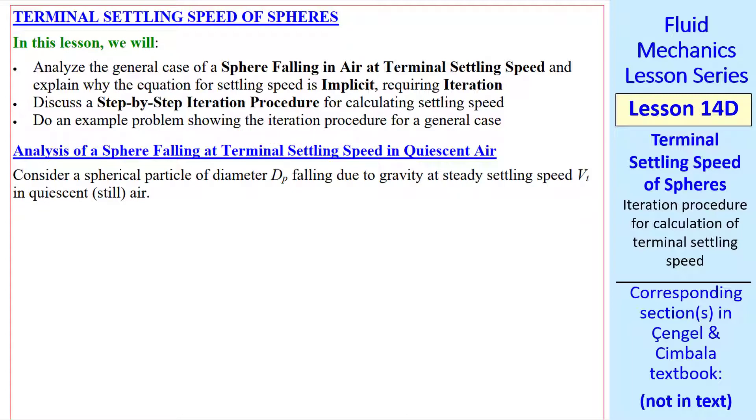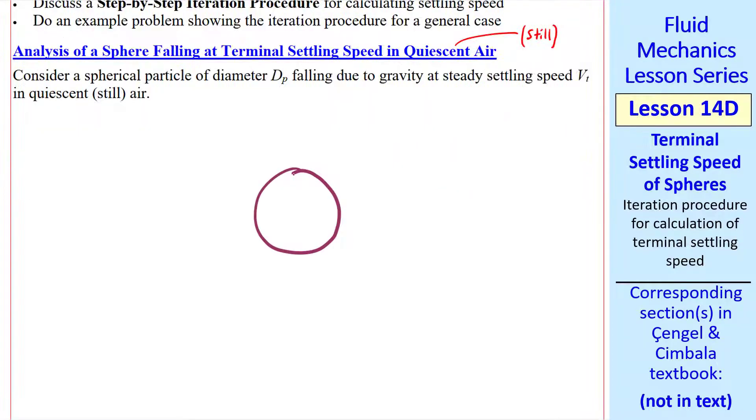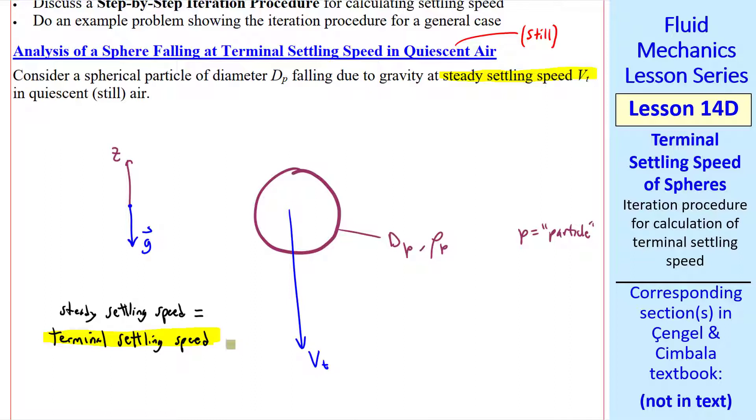First, let's set up the physics and equations for a sphere falling at terminal settling speed in quiescent air. Quiescent simply means that the air is still or not moving. Consider a spherical particle of diameter dp and density rho p, where subscript p stands for particle. This sphere is in air, where z is up and gravity vector g is down. If this particle is released at time zero, it will accelerate, but eventually reach a steady settling speed vt.